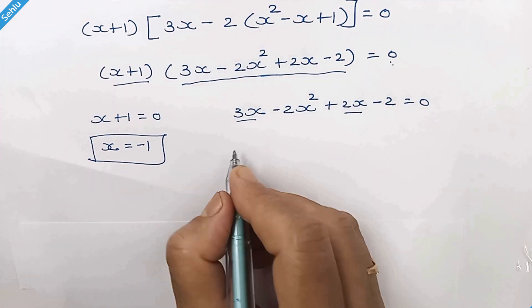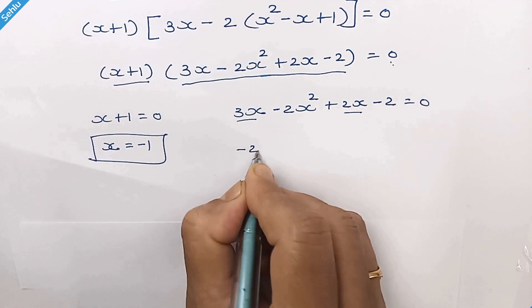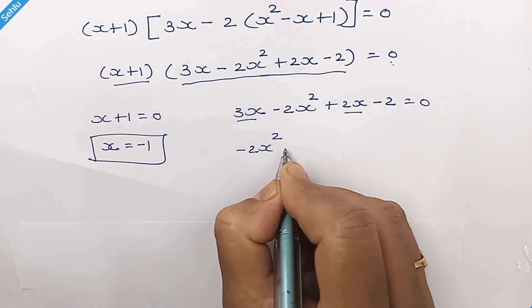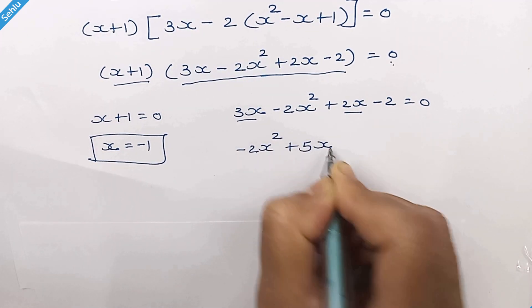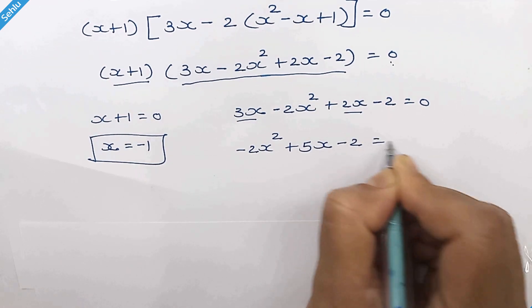These two can be summed up. So we have negative 2x square plus 5x minus 2 is equal to 0.